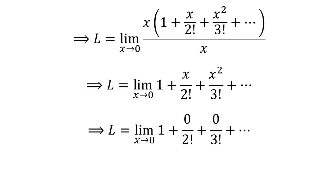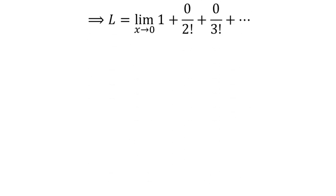As the limit is a polynomial which is continuous at every point of real numbers, let us plug 0 for x. So, the limit L equals 1. That is, the limit of e^x minus 1 over x as x approaches 0 equals 1.